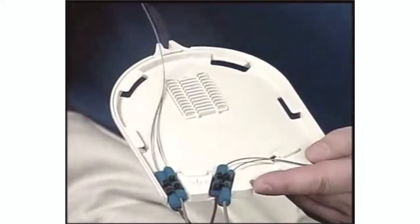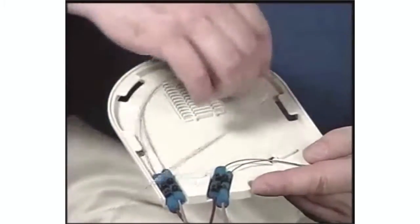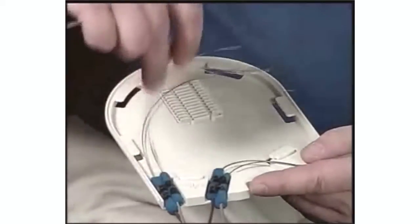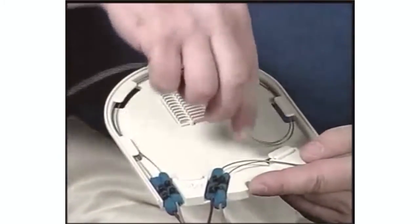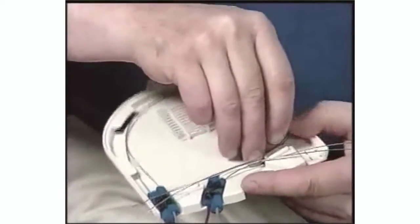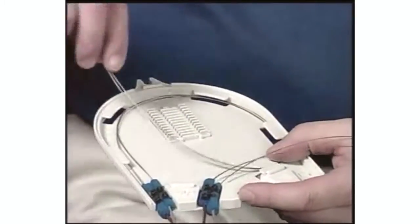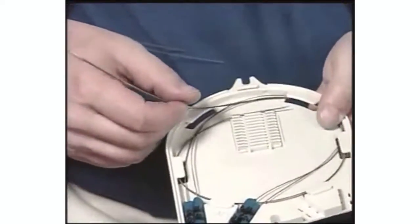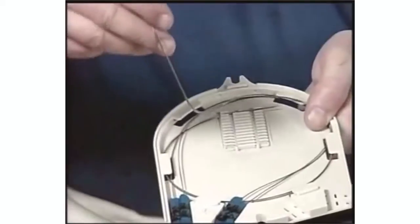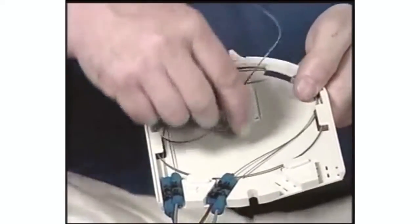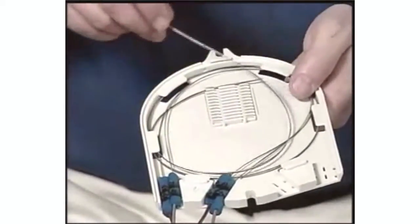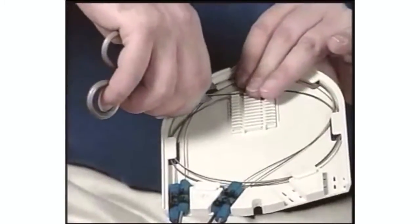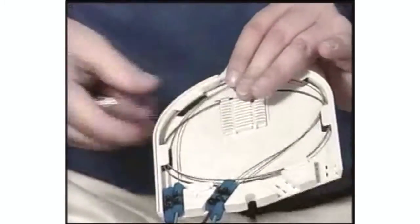Route the incoming fibers at least one and a half times around the tray. Route the outgoing fibers at least one and a half times around the tray in the opposite direction. Now you splice per company practice.